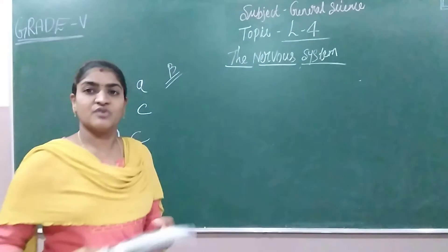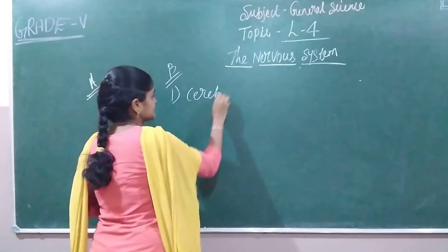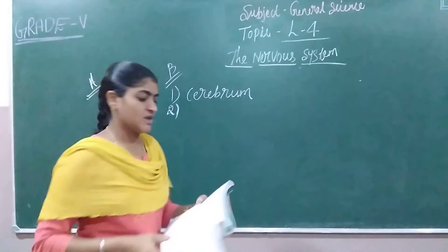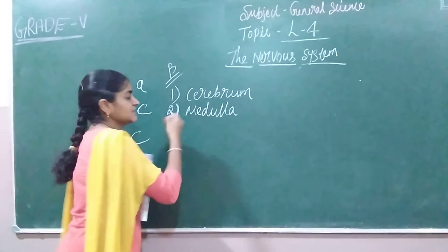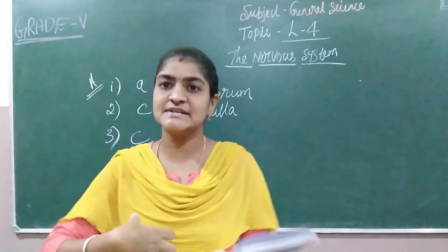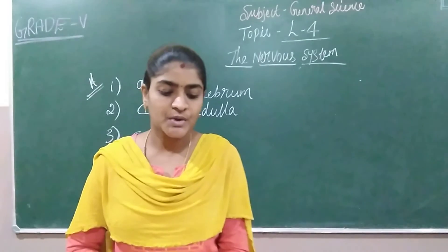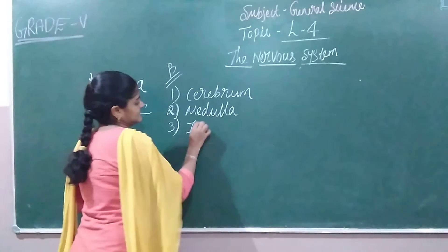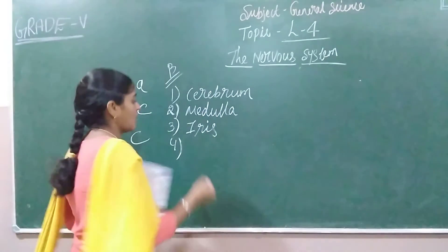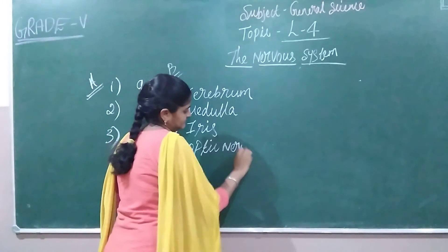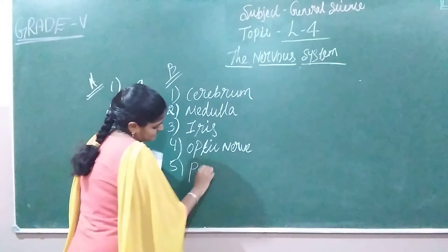Next section B — give one word for the following. First: the largest part of the brain — cerebrum. Second: the part of the brain that works even while sleeping — medulla, because it continuously controls involuntary muscles like heart, kidneys, lungs, intestine, and stomach. Third: the colored part of an eye — iris. Fourth: the nerve which carries a message from the eye to the brain — optic nerve. Fifth: the opening in the iris — pupil.